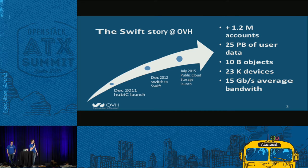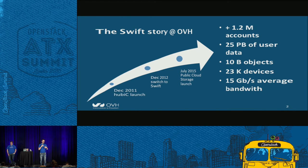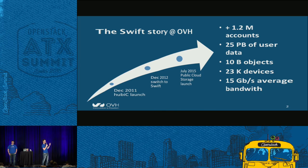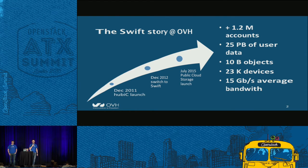Here are some numbers. We manage more than 25 petabytes of user data, which means we have almost 75 petabytes of space on our disks. We manage more than 10 billion objects, and everything is running on 23,000 devices.